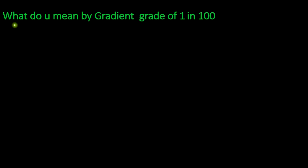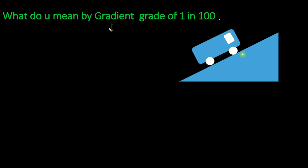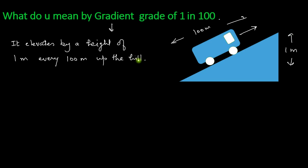Let us discuss problem number one. What do you mean by a gradient grade of 1 in 100? Gradient comes into effect when a locomotive tries to move up the hill or down the hill. Let me draw a diagram to illustrate this. We have uphill here and this is the locomotive moving upwards. A gradient grade of 1 in 100 means if it covers a distance of 100 meters, the elevation it achieves is 1 meter. So the train elevates by a height of 1 meter every 100 meters up the hill.